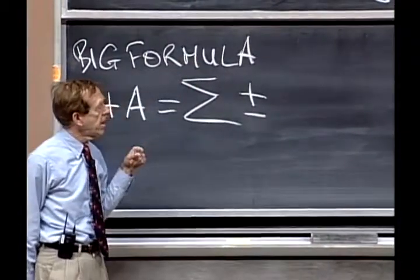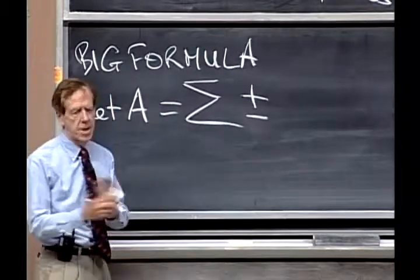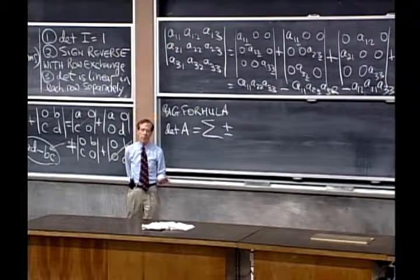In the three-by-three case I had how many terms? Six, and half were plus and half were minus. How many terms are you figuring for four-by-four?